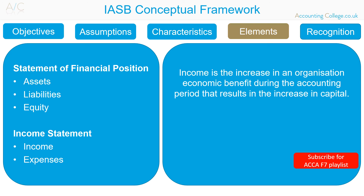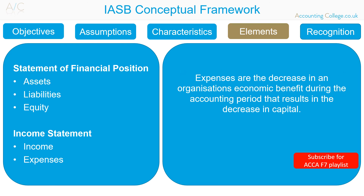Income is the increase in an organisation's economic benefit during the accounting period that results in the increase in capital. This can be in the form of direct inflows of cash, enhancements of assets, or in the decrease of a liability. Revenue represents the earnings of an organisation through its ordinary activities, and gains represent all other items of income. Expenses are the decrease in an organisation's economic benefit during the accounting period that results in the decrease in capital. This can be in the form of direct outflows of cash, depletion of an asset, or in the increase of a liability.